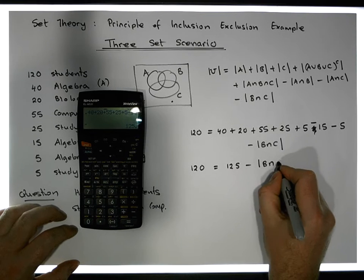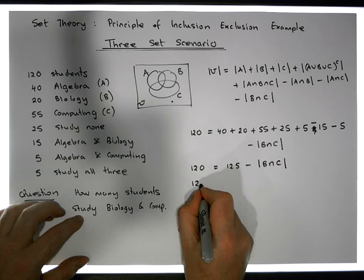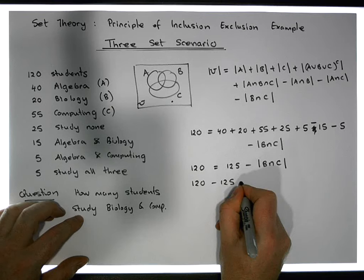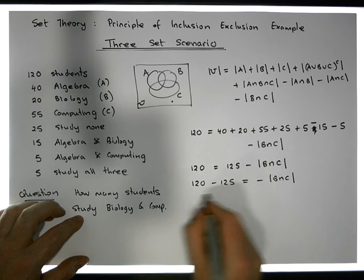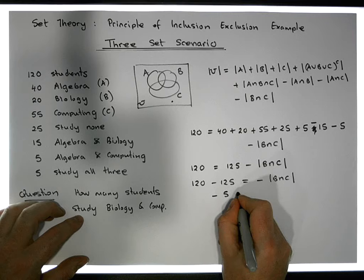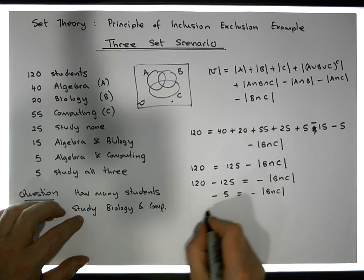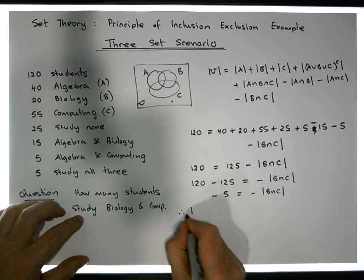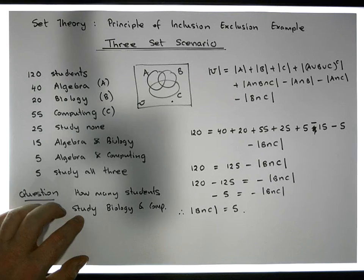Which tells us very clearly that 120 minus 125 must be equal to minus B intersection C. In other words, minus 5 is equal to minus B intersection C, which tells us that B intersection with C must be equal to 5.